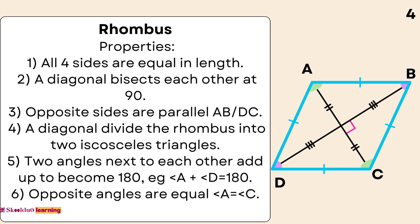Rhombus Properties. One: All four sides are equal in length. Two: The diagonals bisect each other at 90 degrees. Three: Opposite sides are parallel (AB parallel to DC). Four: A diagonal divides the rhombus into two isosceles triangles. Five: Two angles next to each other add up to 180 degrees. Example: A plus D equals 180.